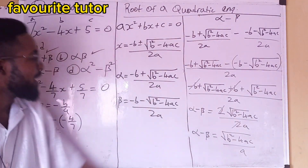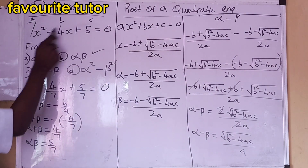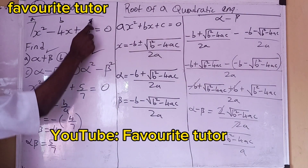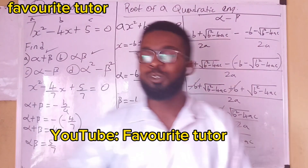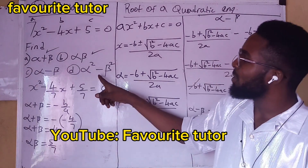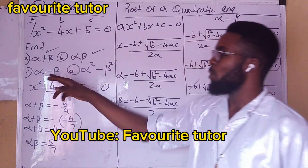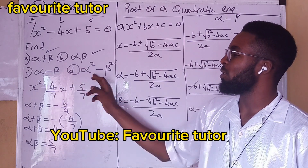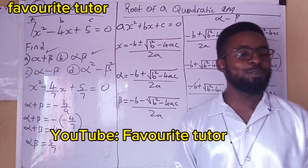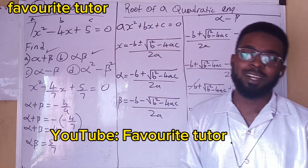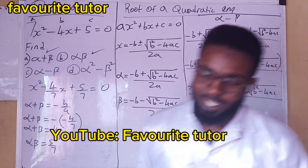When you solve this, you have the value for alpha minus beta. Here a equals 7, b equals minus 4, c equals 5. I'm going to leave you to apply this formula. In our next video or next class, we'll find the values of these two remaining parts and you'll check if you got it right. Thank you, God bless you, and don't forget to subscribe to my YouTube channel for more exciting videos.